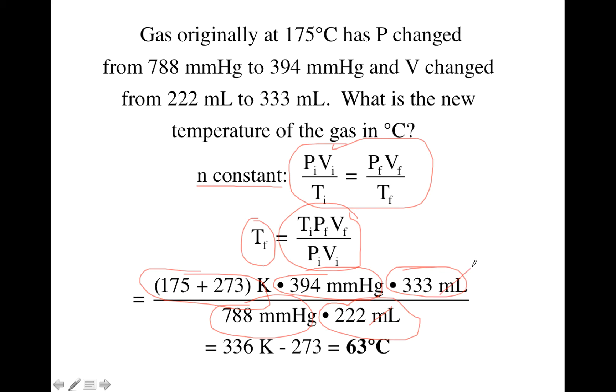So if you do the math here, the milliliters will cancel, the millimeters of mercury will cancel, and you will end up with an answer in Kelvins, 336K. But they asked in the problem for your final answer to be given in degrees C, so we need to subtract 273 to get our final answer in degrees Celsius.